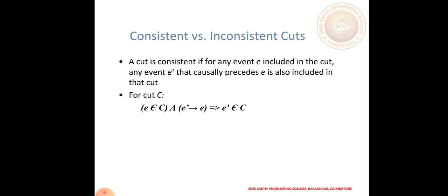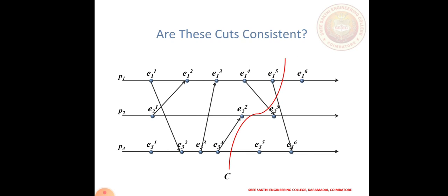From the previous slides, this is a constraint. The constraint of cuts is: if any event E is included in the cuts, then E-dash should also belong to the cuts. If E belongs to cuts, then E-dash also wants to belong to cuts — that belonging must happen in cuts. In this particular diagram, the cuts is consistent because through cuts the events are ordered and there should be no overlapping.